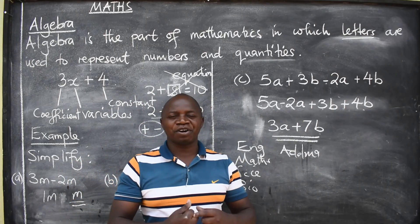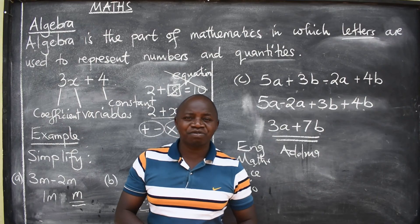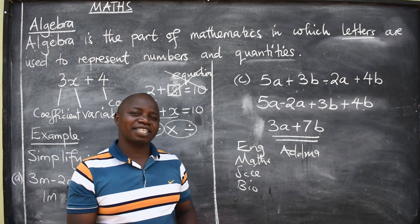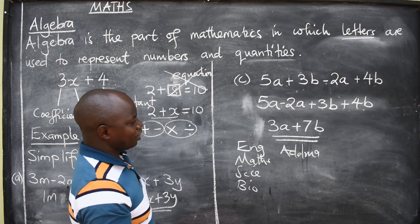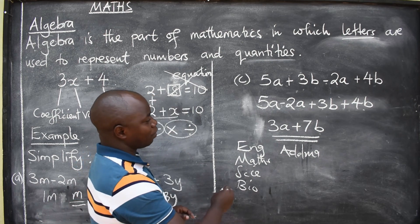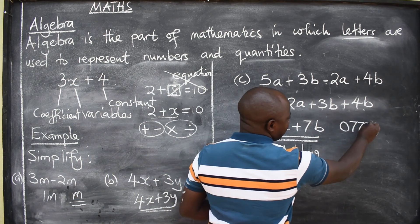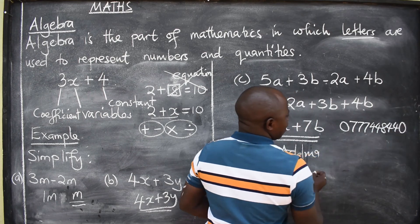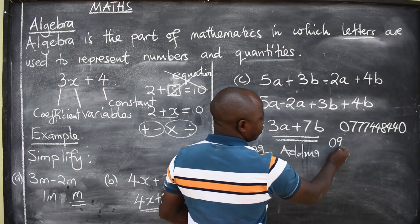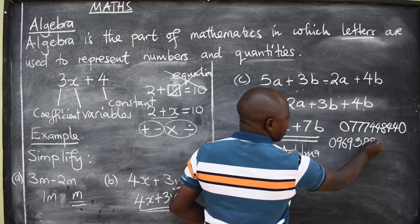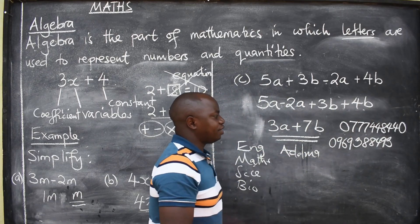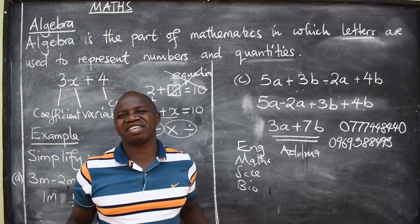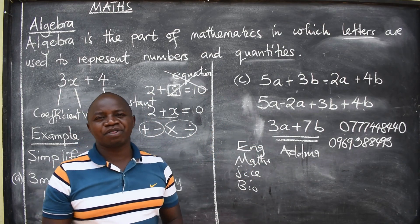So, please join our groups now. Those of you in grade 12, grade 10 to 12, this is your time to join. Tell your parents. If you want to contact me, I only have two numbers. Please contact me on 0777-448-440 or the MTN one which is 0969-38-84-93, 93 at the end. These are the only two numbers. For more information, contact me on those two numbers.